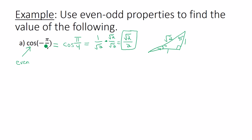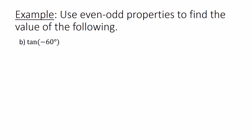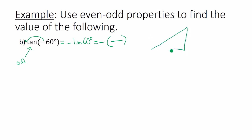Next example: tangent of −60 degrees. Tangent is an odd function, so we bring the negative sign out front: negative tangent of 60 degrees. Drawing a 30-60-90 triangle and using opposite over adjacent for the 60-degree angle gives √3 over 1. So the answer is negative square root of 3.